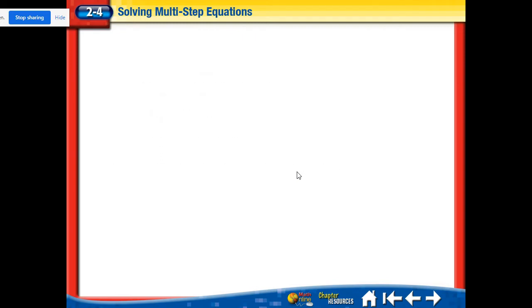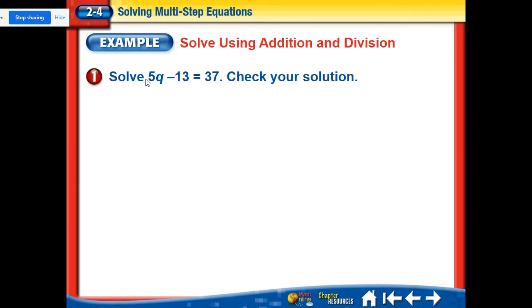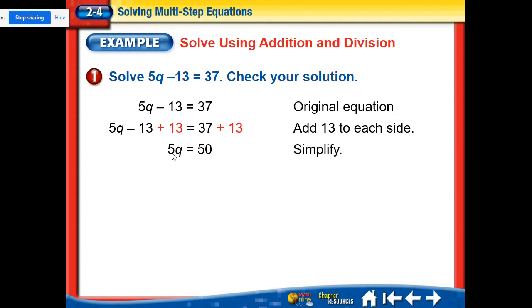So let's take a look at the first example. So here we have 5q minus 13 equals 37. So there's two operations. There's a multiplication and a minus 13. So we're going to solve for this q here. We're going to work the operation backwards. So this minus 13 has to go first. So what's the opposite of minus 13? It's plus 13. So we're going to plus 13 to both sides. Simplify this. Those two minus 13 plus 13 eliminate each other and so we're just left with the 5q. 37 plus 13 is 50.